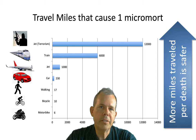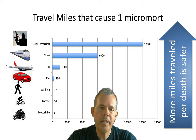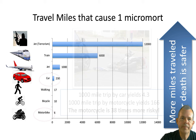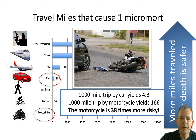Train is obviously very safe. A jet is 5 times safer than a car. Walking is not so safe, biking is worse, and motorcycle is only 6 miles per micromort — pretty risky. A 1,000-mile car trip yields 4.3 micromorts, while 1,000 miles by motorcycle gives you 166. That tells us the motorcycle is 38 times more risky than driving a car. Your mom was right — it's a donor cycle.